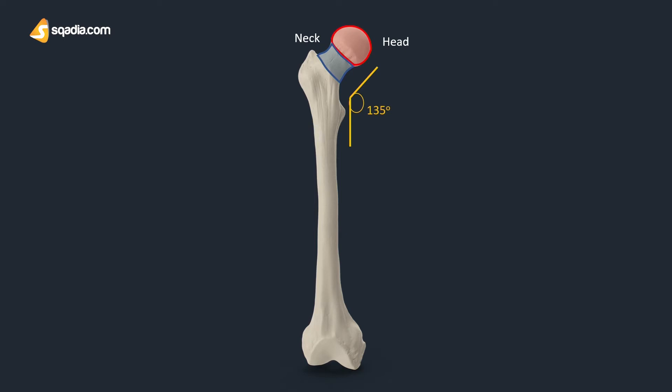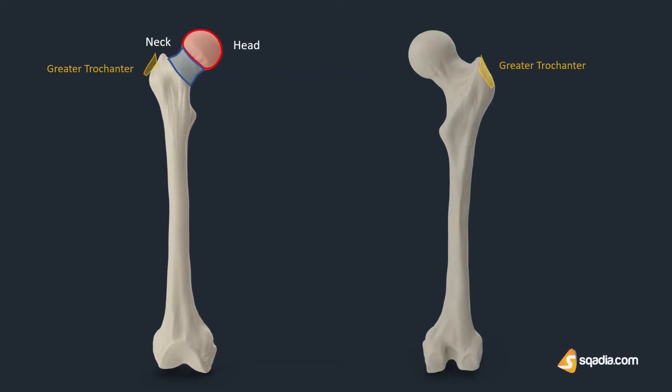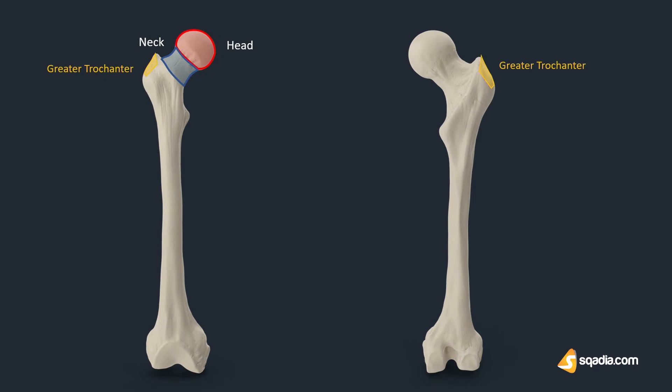By clearly observing the anterior aspect, just lateral to the neck, a palpable projection of the bone emerges — this is the greater trochanter. The lesser trochanter, as the name shows, is smaller than the greater trochanter, projecting from the posterior medial side of the femur, just inferior to the neck-shaft junction.